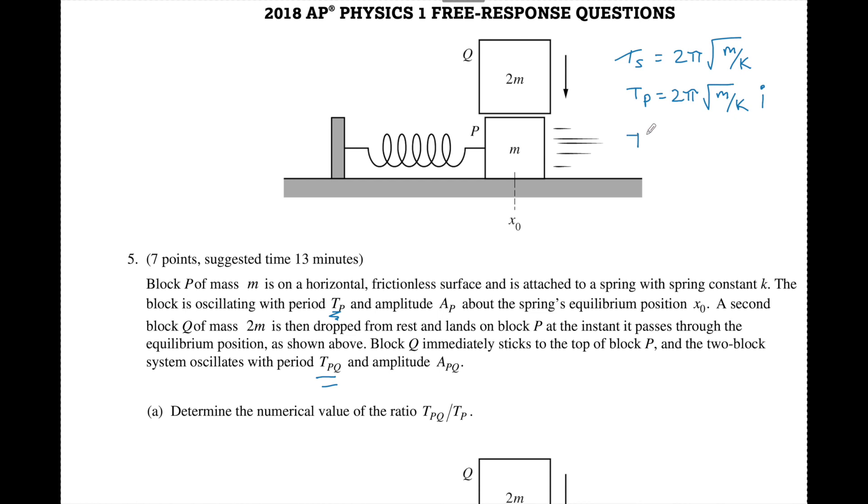Our final was T p sub q and that was given by 2π but now m is changed. It's going to be the sum right? This is a total inelastic collision in a sense. So now we have 3m over k and the k remains the same because the spring did not change. So this is our final condition.